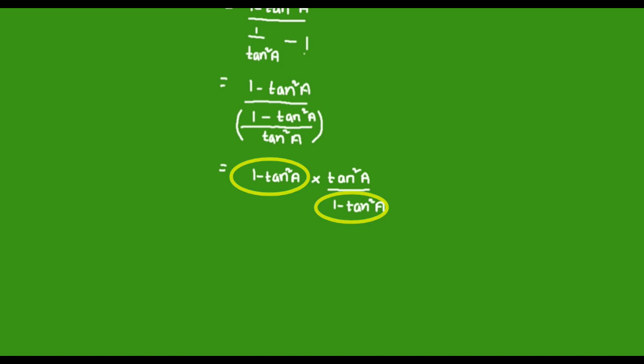Here it can be found that the term (1 - tan²a) is common in numerator as well as in denominator, so it can be cancelled. By cancelling it we will find only one term, that is tan²a, which is equal to right hand side.